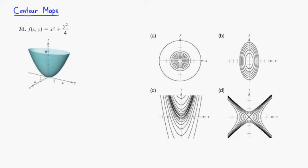Let's talk about contour maps. Contour maps is basically a collection of cross-sectional curves by a bunch of planes parallel to the x-y plane.